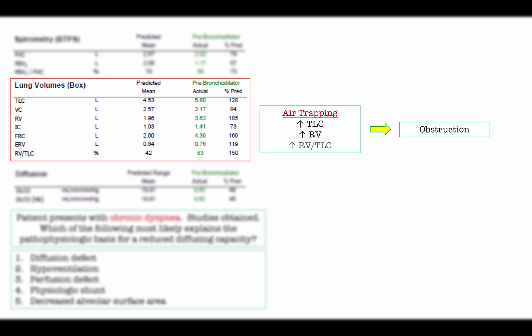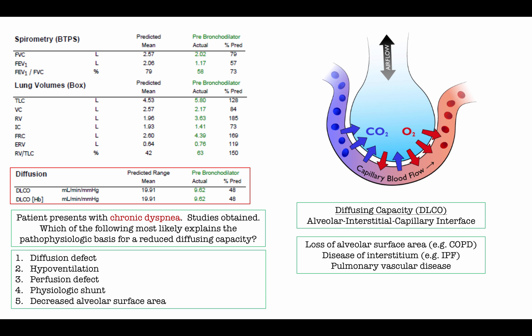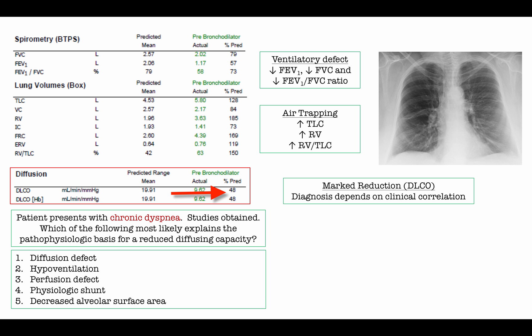Next, we look at the diffusion capacity. The diffusion capacity assesses the alveolar-interstitial-capillary interface. The main diseases assessed include loss of alveolar surface as in COPD, diseases of the interstitium with pulmonary fibrosis as the prototype, and diseases of pulmonary blood flow as seen in pulmonary hypertension or pulmonary embolism. This patient has a marked reduction of diffusing capacity, reduced to 48% of predicted. The reduced DLCO does not tell you the cause — you need clinical correlation based on history, physical exam, radiographs, spirometry, and lung volumes.